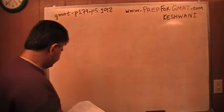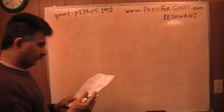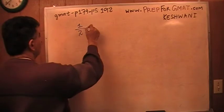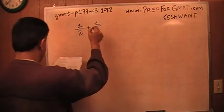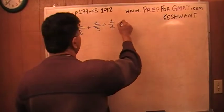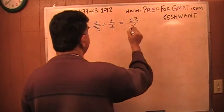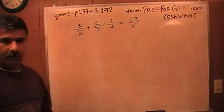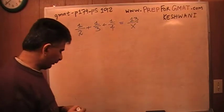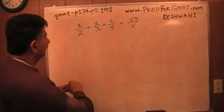Let's take a look at it. It says one-half plus one-third plus one-fourth equals 13 over X. The very first thing I am going to do is simplify this side of the equation so that we have something to work with, something manageable. This is too cumbersome, so let's simplify it.